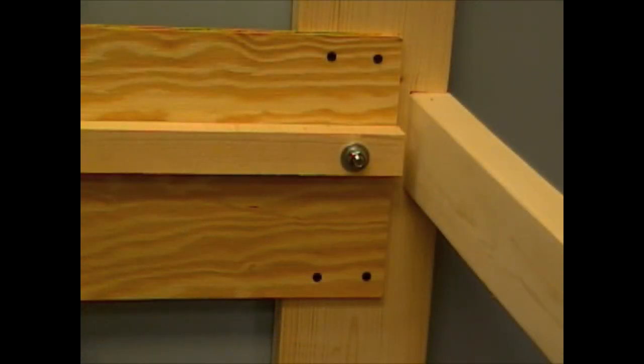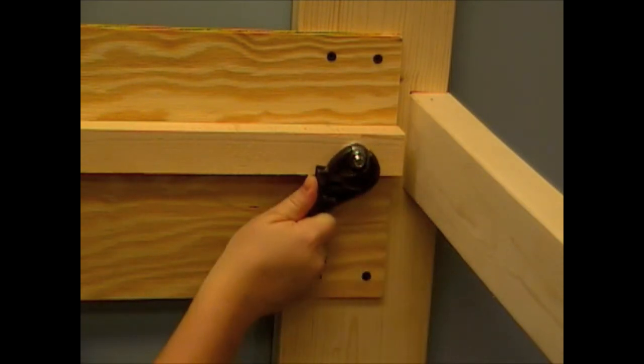Once you've placed all your slats, use the front and back railing to secure it into place with these four screws. Once you've completed that on all four sides, use your adjustable wrench to tighten each carriage bolt.